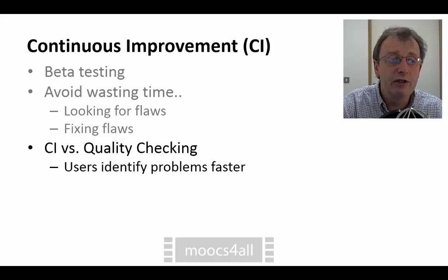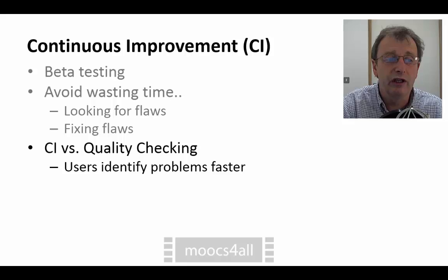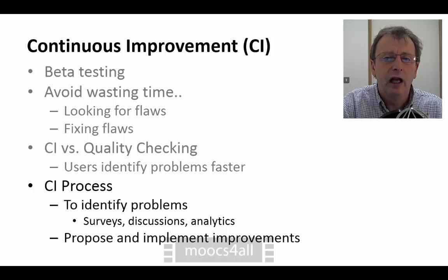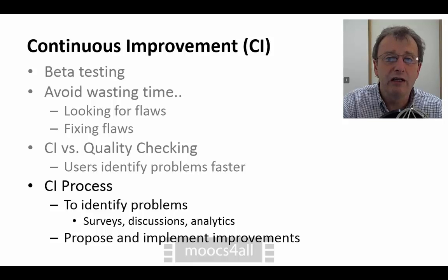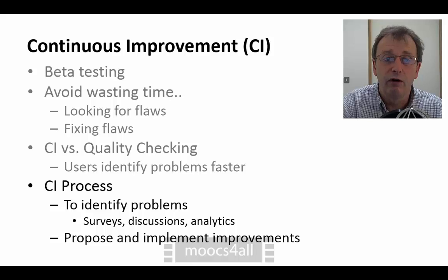We're comparing continuous improvement versus quality checking. We could waste a lot of time on quality checking when users could identify the problems faster. This process might involve surveys at the end of the course to directly ask where the issues were, using discussion forums for feedback, or using analytics within the platform to get data about where people were having problems. From this we propose and implement improvements for the course.